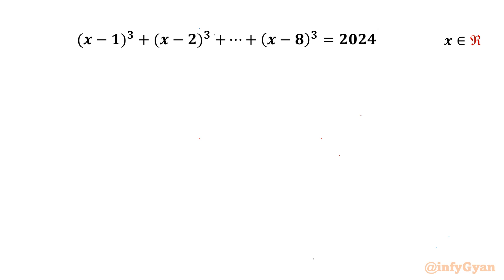Welcome back to Infigyan, my dear friends. In today's video we are going to take up another challenging question from algebraic equations. We will be solving: (x−1)³ + (x−2)³ + … + (x−8)³ = 2024, where x belongs to real numbers. So let us get it started.